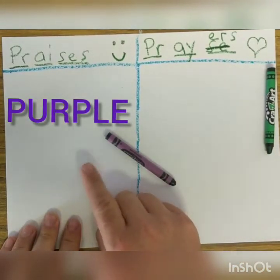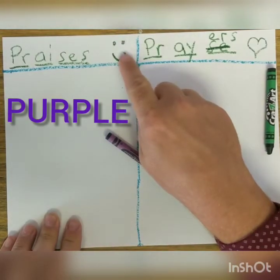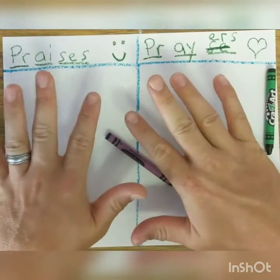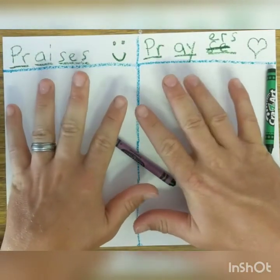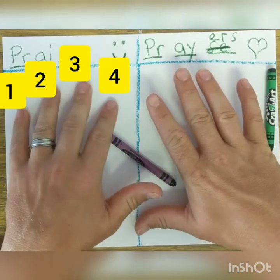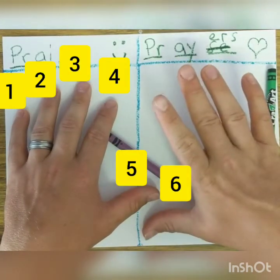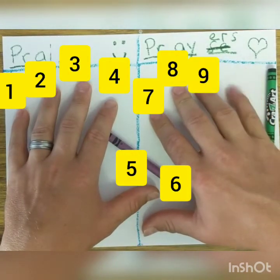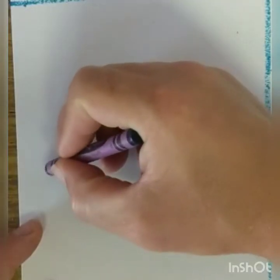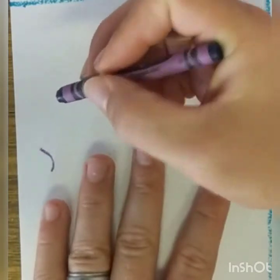Okay. So praises. What do I want to tell God that he's given me that makes me happy? Oh, I know what it is. I was thinking just yesterday about my fingers. You see how I have 10 fingers? Look, one, two, three, four, five, six, seven, eight, nine, 10, 10 fingers. I was thinking, wow, God, thank you so much for my fingers.